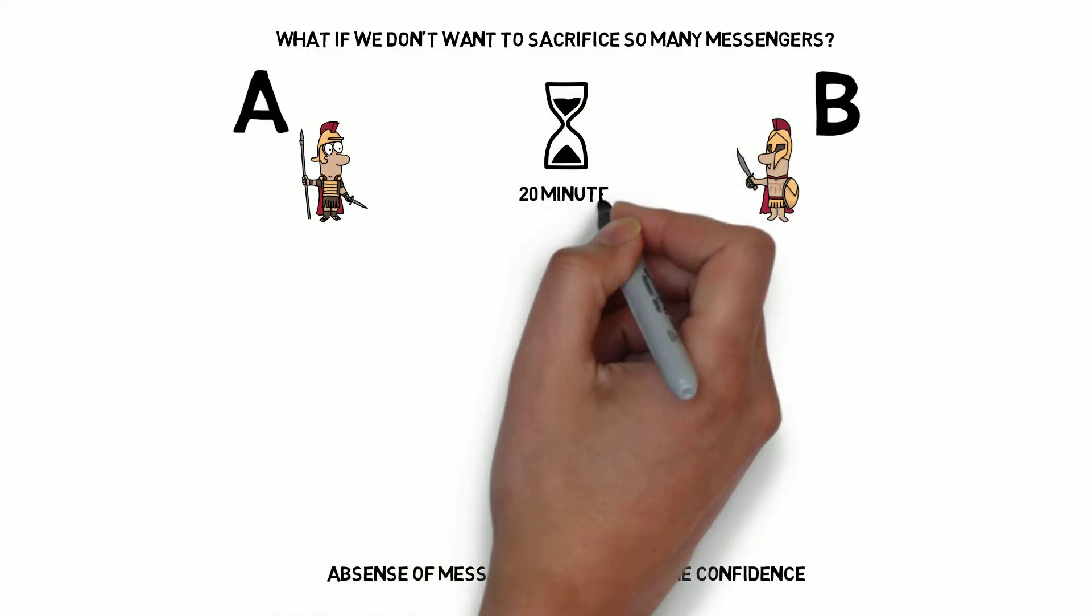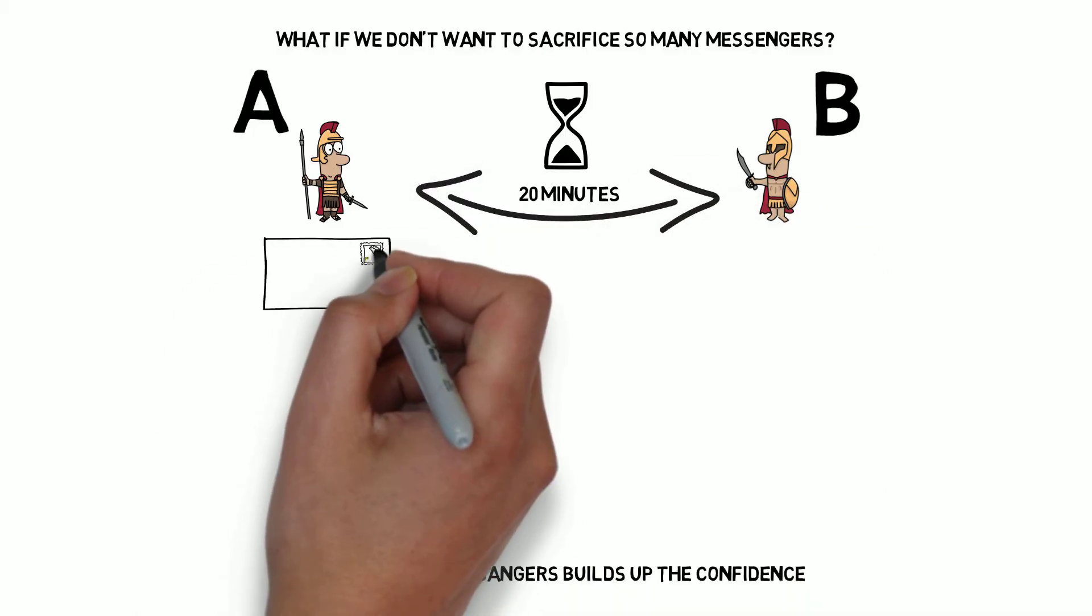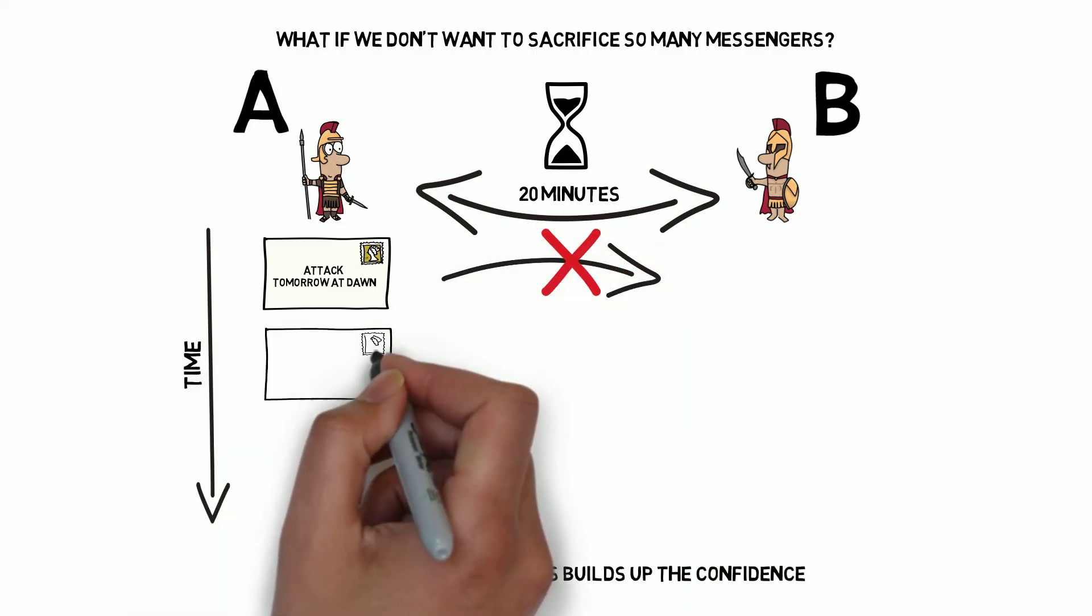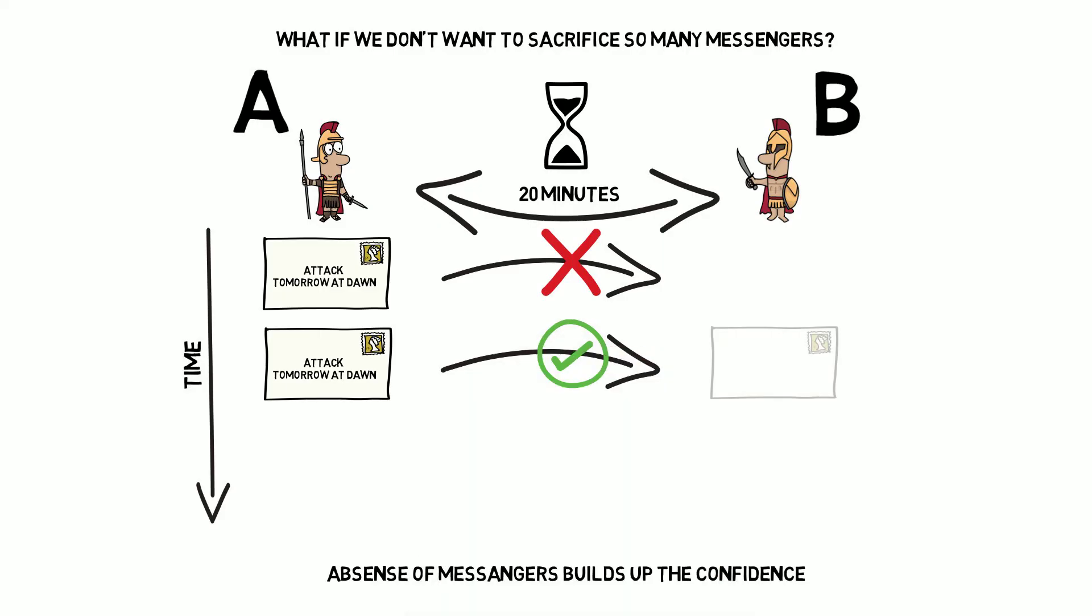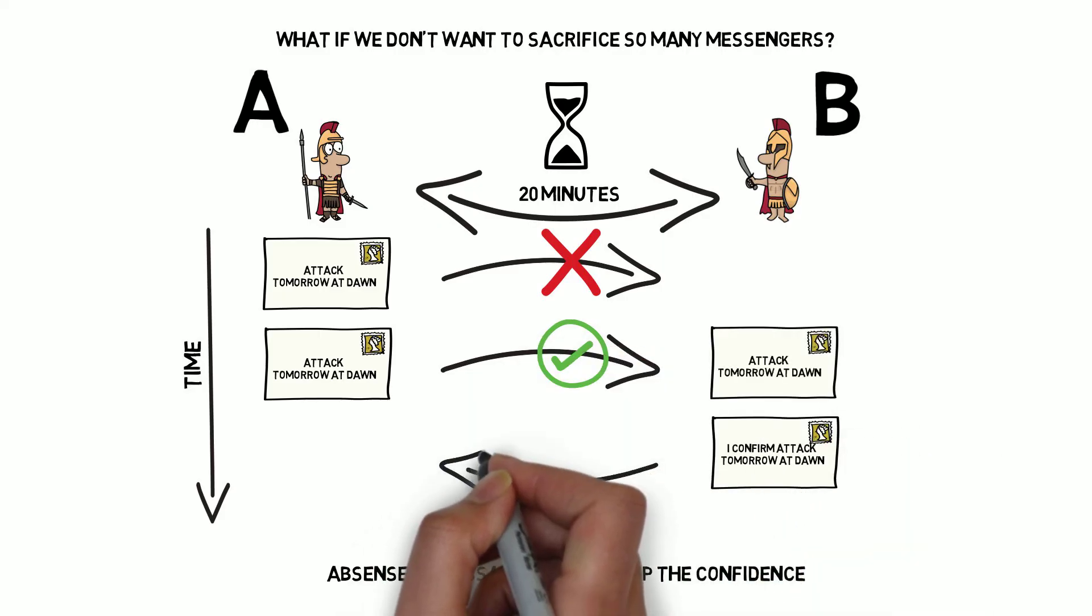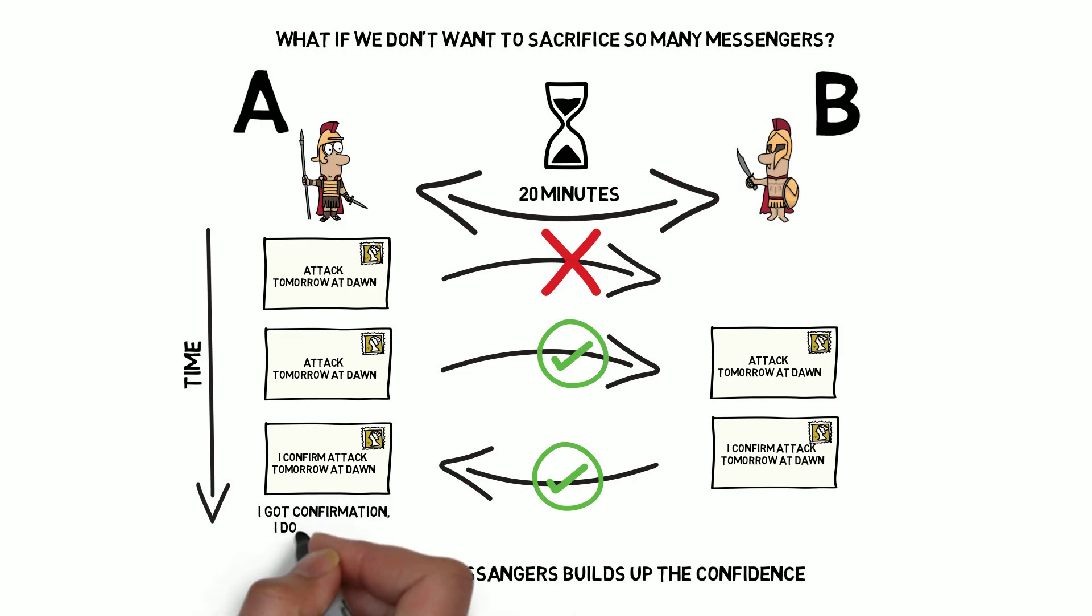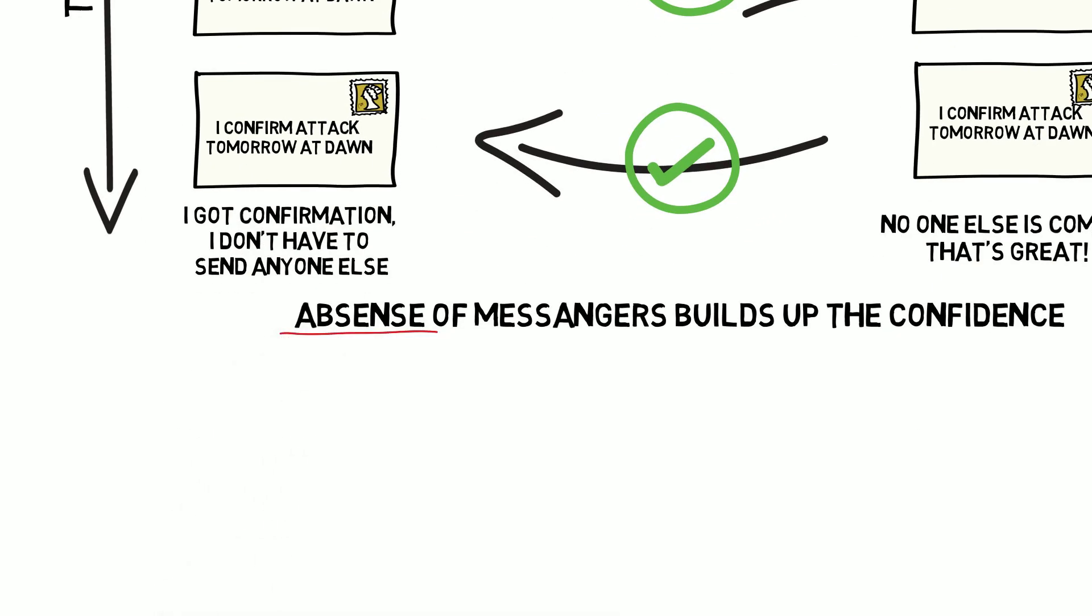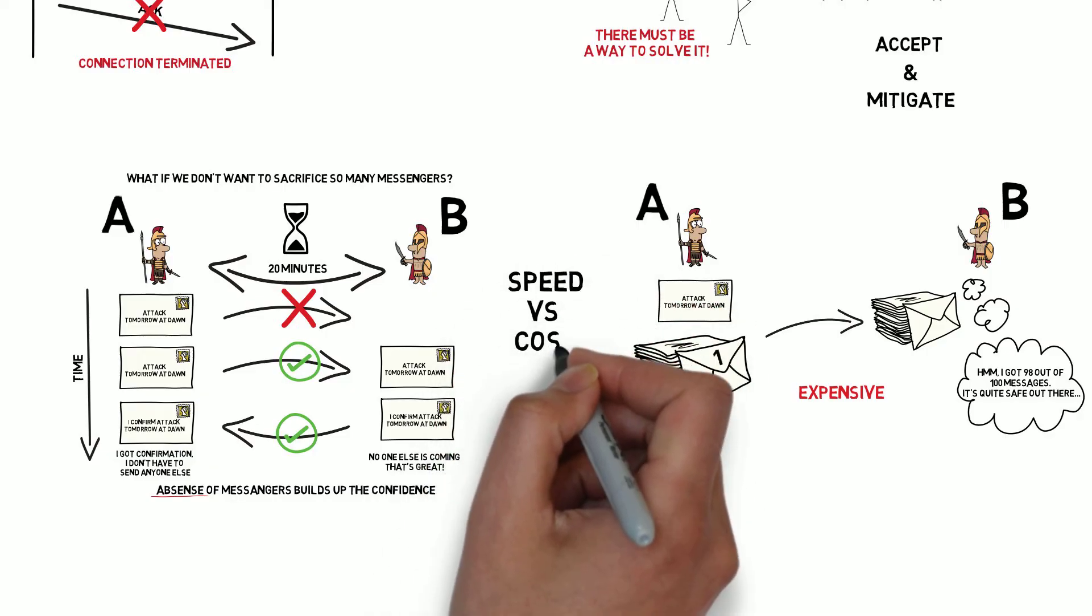Let's assume that it takes 20 minutes to cross the valley, deliver a message and come back. General A starts sending messengers every 20 minutes until he gets a confirmation from general B. Whenever confirmation arrives, general A stops sending messengers. In the meantime, general B, after sending his messenger with his confirmation, awaits for the other messengers coming from general A. But this time, an absence of messengers builds up B's confidence, as this is what the generals agreed on. In this case, we have a clear speed versus cost trade-off, and it's up to us which approach is more suitable to our problem.